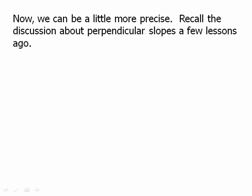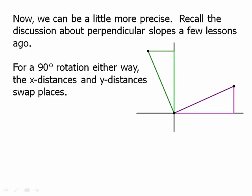Now we can be a little more precise. Recall the discussion about perpendicular slopes a few lessons ago. For a 90 degree rotation either way the x distances and y distances swap places.